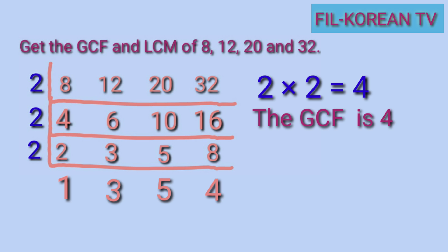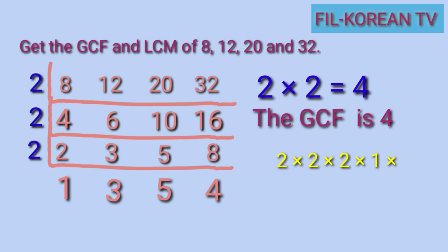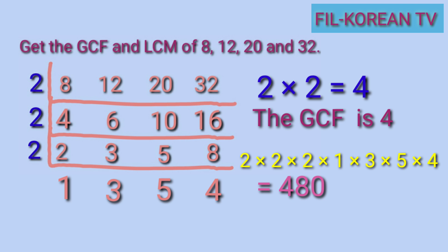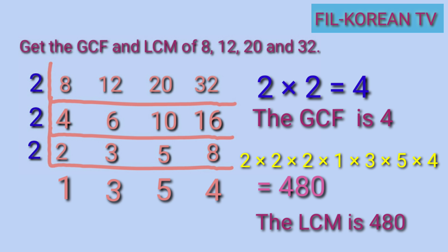To get the LCM, we multiply all the prime divisors and the last quotients of the numbers: 2 times 2 times 2 times 1 times 3 times 5 times 4. The answer is 480. So 480 is the LCM of 8, 12, 20, and 32. The LCM is the lowest number that can be divided by all the given numbers, and the GCF is the highest number that can divide all the given numbers.